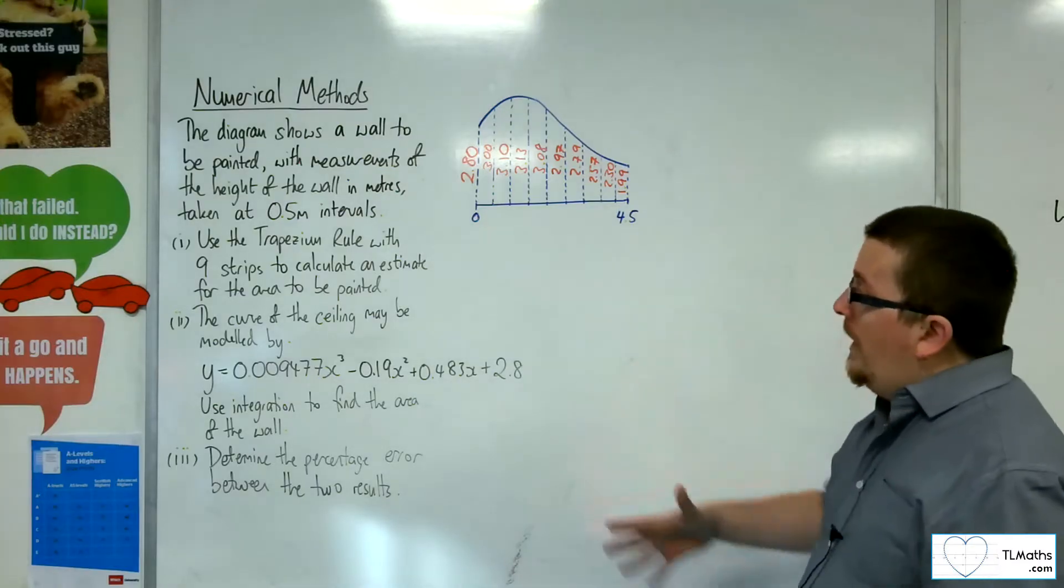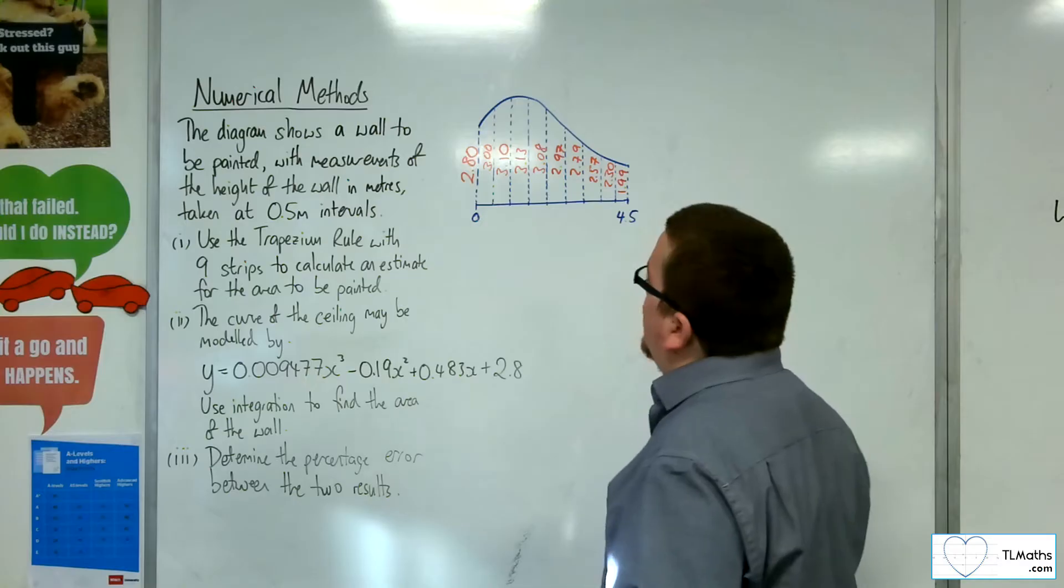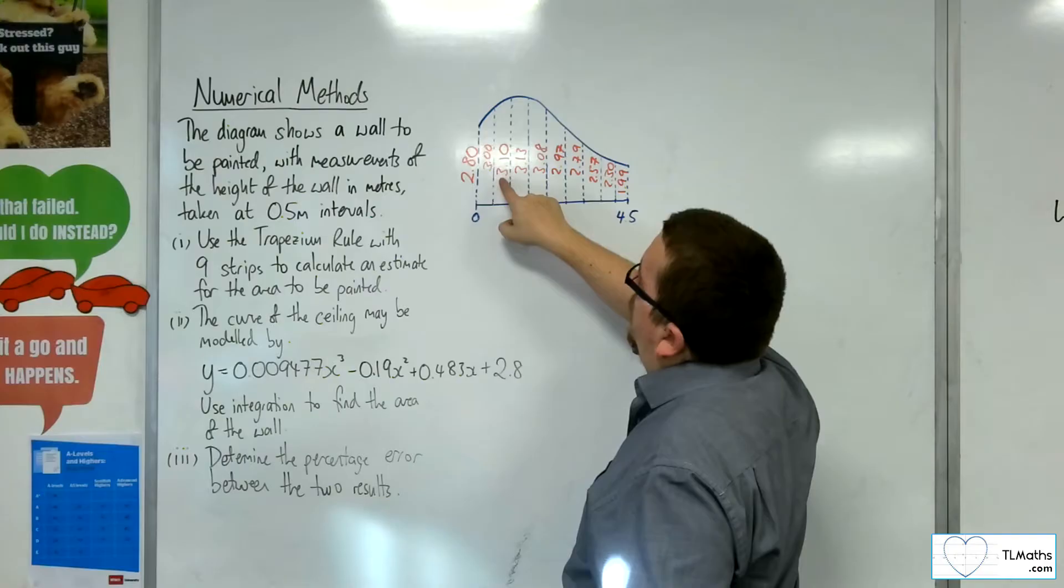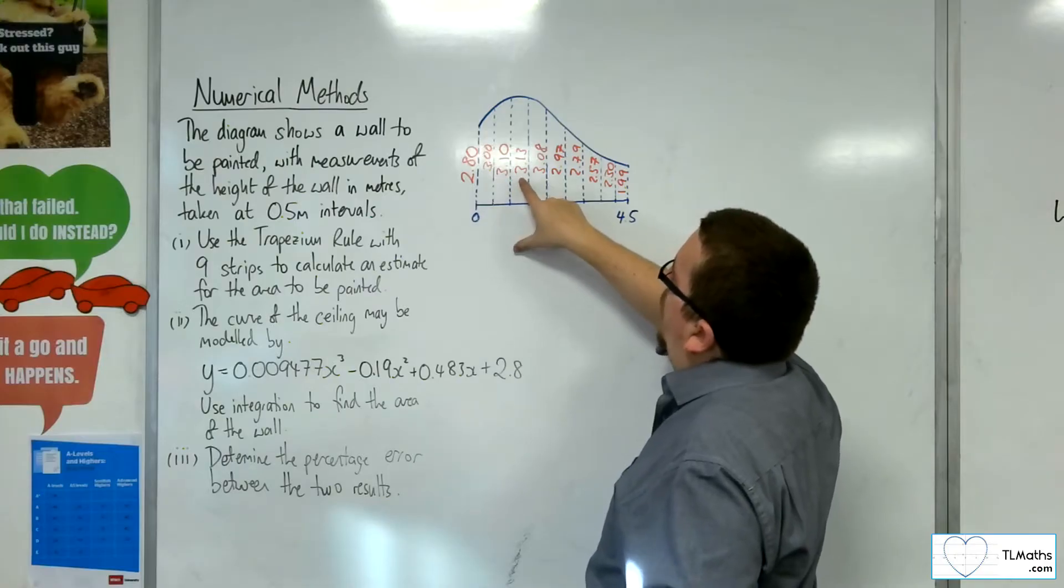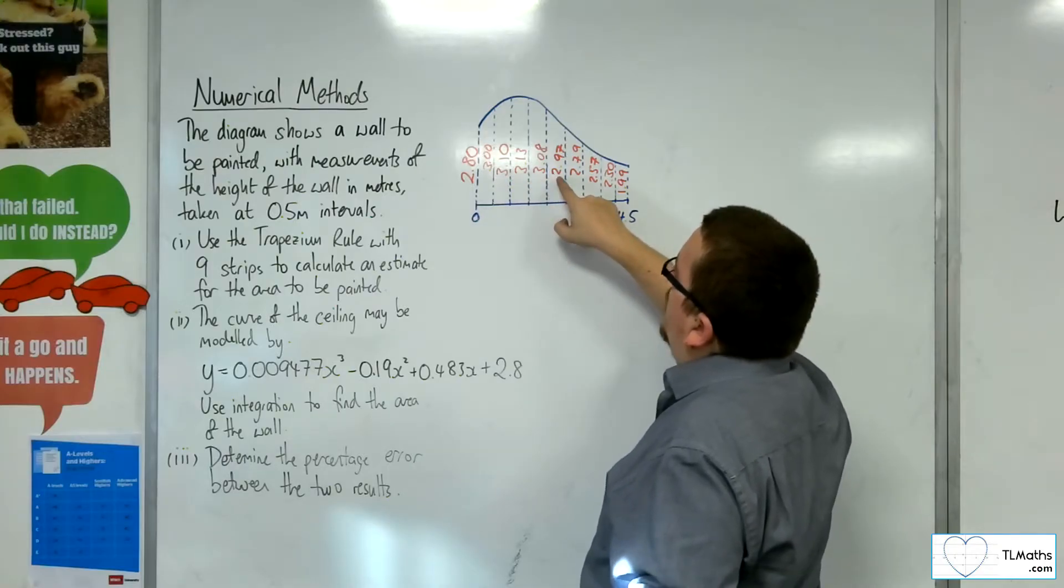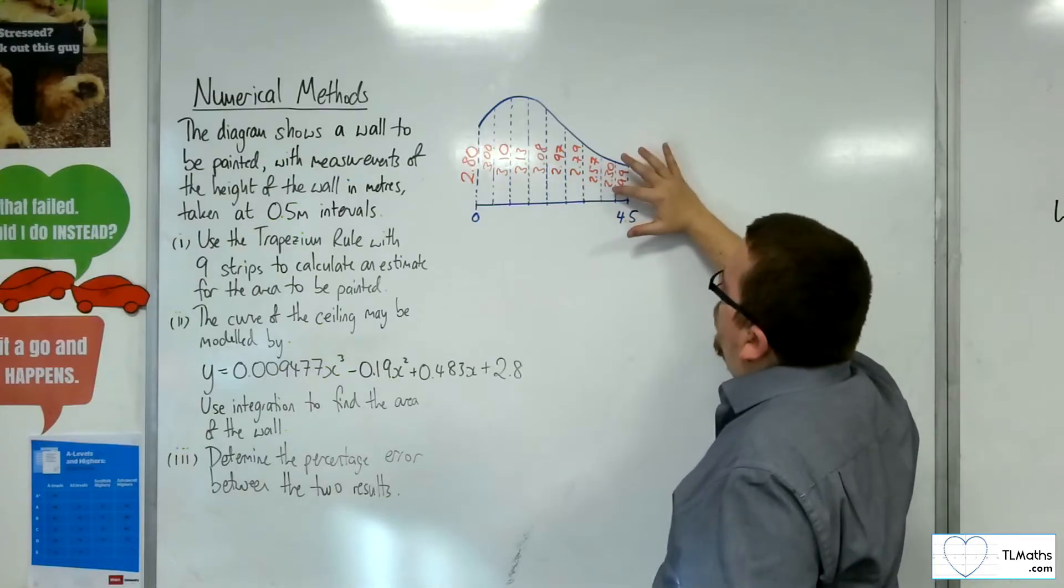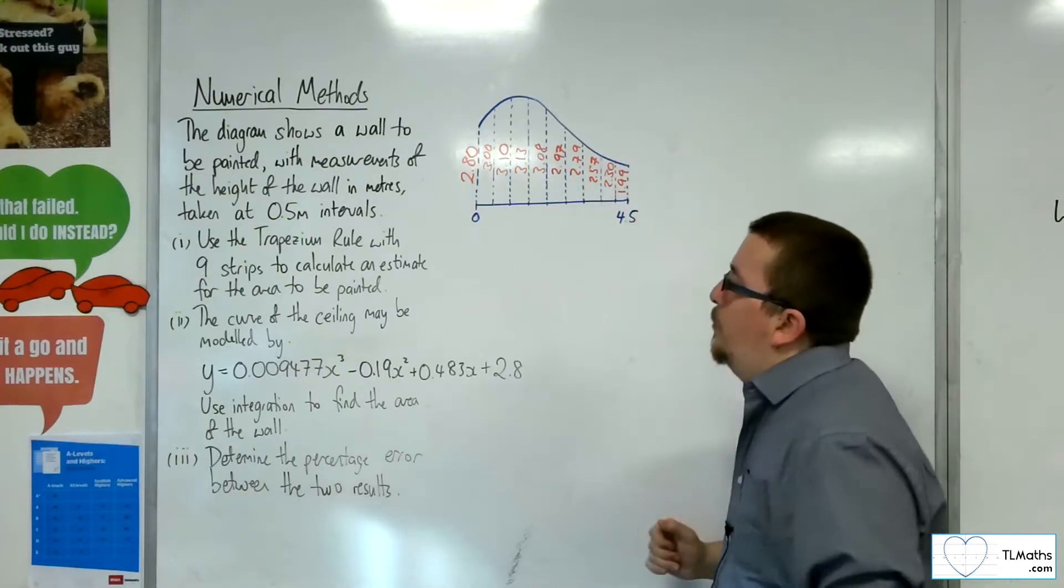If you can't quite see them, we've got 2.80, 3.00, 3.10, 3.13, 3.08, 2.97, 2.79, 2.57, 2.30, and 1.99.